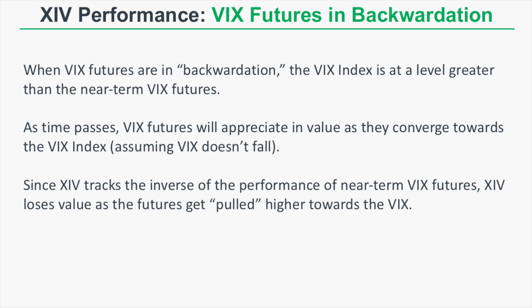Now let's look at XIV's performance when the VIX futures are in the opposite configuration — backwardation. When the VIX futures are in backwardation, the VIX index is at a level greater than the near-term VIX futures. As time passes, VIX futures have to converge to the VIX index, so when backwardation is present, those near-term VIX futures will appreciate in value as they converge to the higher VIX index — assuming the VIX does not fall. Since XIV tracks the inverse of the performance of the near-term VIX futures, XIV loses value as the futures get pulled higher towards the VIX.